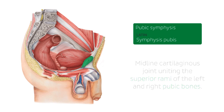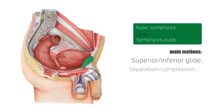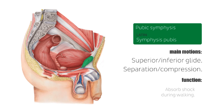The main motions associated with the pubic symphysis include superior and inferior glide, as well as separation and compression. The function of this joint is to absorb shock during walking.